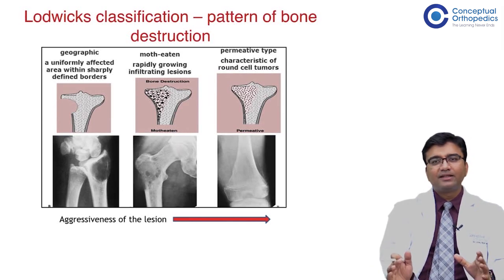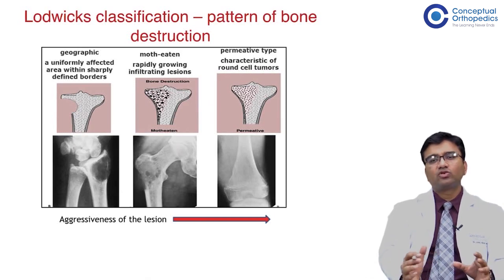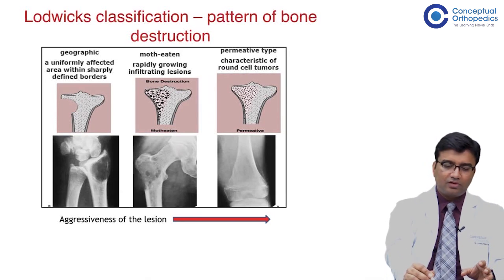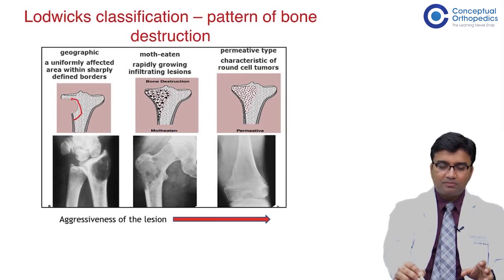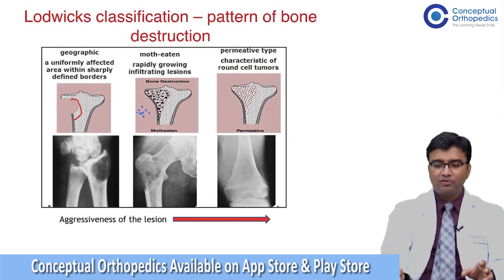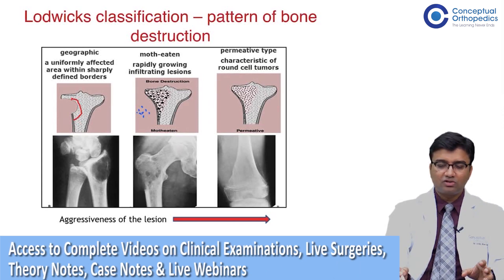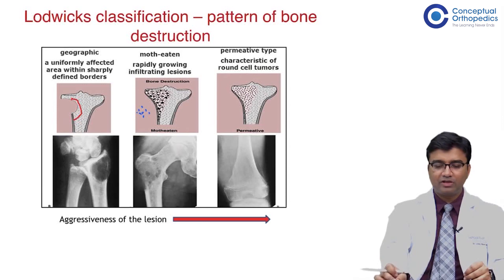People sometimes get confused and feel that a destructive pattern is suggestive of a diagnosis, but it is telling you about the aggressiveness of the lesion. The geographic pattern means a geographical boundary with a well-demarcated zone, seen in less aggressive tumors. Moth-eaten means various punctate lesions destroying bone, seen in fast-growing or aggressive lesions. The third is the permeative type, where you see complete destruction over large areas, seen in very rapidly growing lesions like Ewing sarcoma or multiple myeloma.